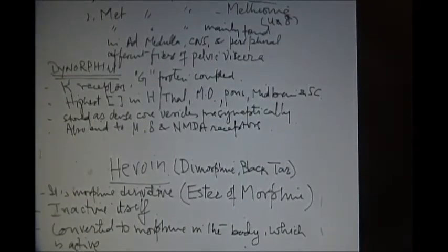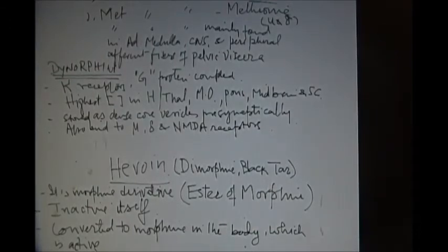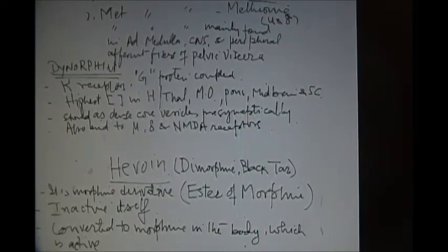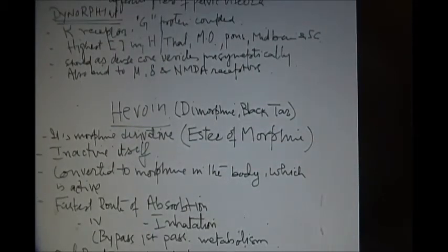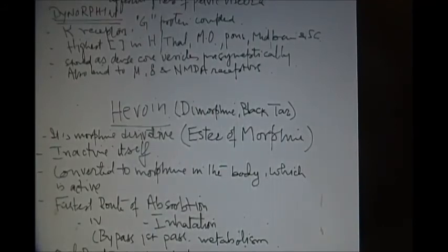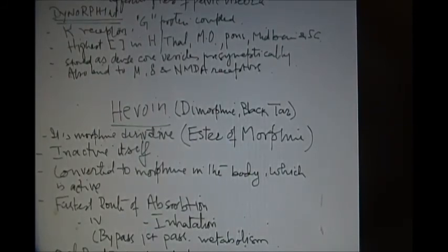The dynorphins. The dynorphins act on kappa receptor, but they also act on mu, delta and NMDA receptors. They are G protein coupled and their highest concentration is found in hypothalamus, medulla, pons, midbrain and spinal cord. The dynorphins are stored as dense core vesicles presynaptically.